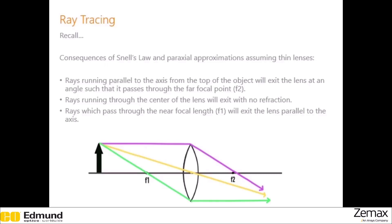Rule three: rays that travel through the focal point of the near side of the lens and then are refracted will be refracted such that the ray travels parallel to the optical axis after refraction, as illustrated by the green ray in the diagram. Note that rule one and rule three are actually the same rule — just consider the reciprocity of light, which says that light traveling forwards and backwards through the system must take the same path. So the green ray going through the focal point and being refracted to travel parallel is just the flip side of the purple ray traveling parallel and being refracted through the focal point.